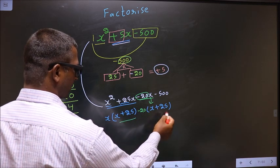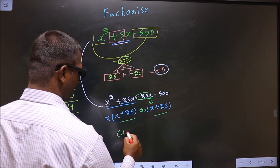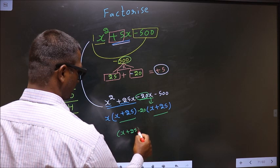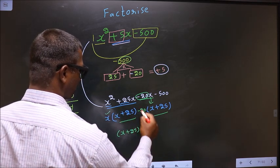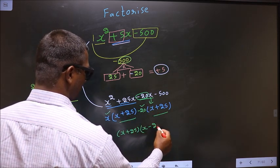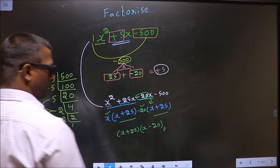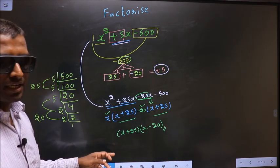Now you should take out x plus 25 common. So here you have x, and here you have minus 20. This is our answer.